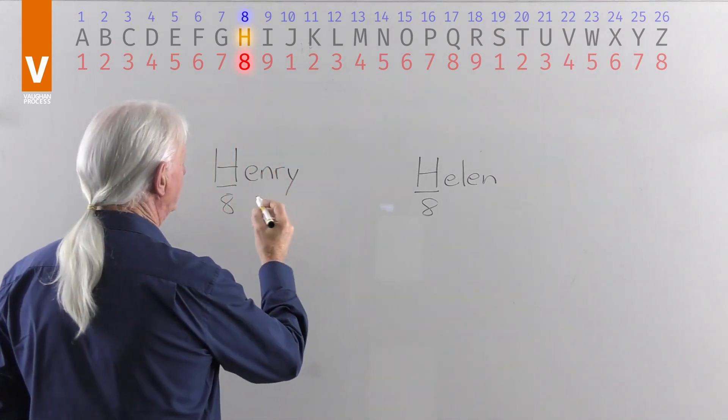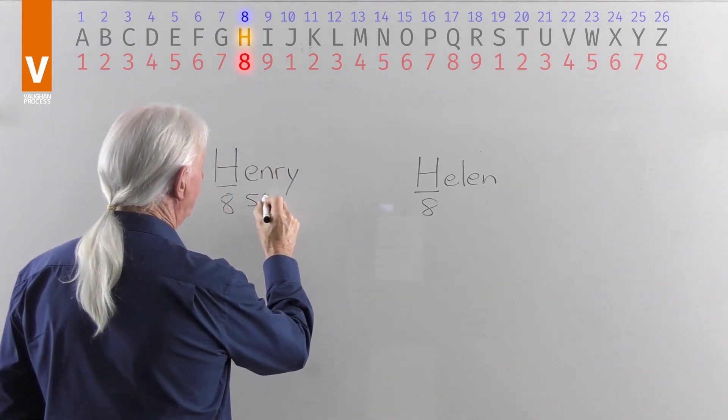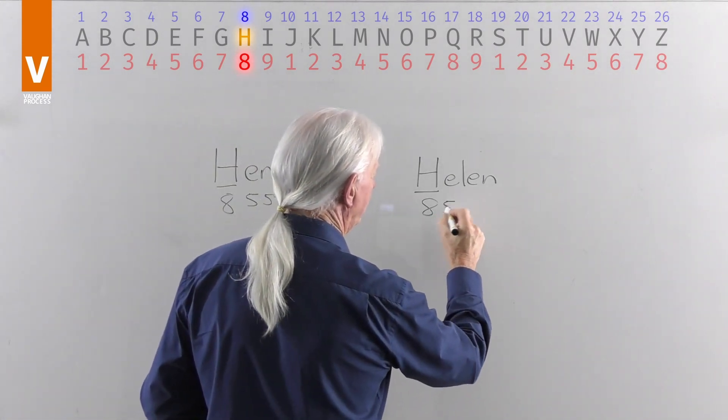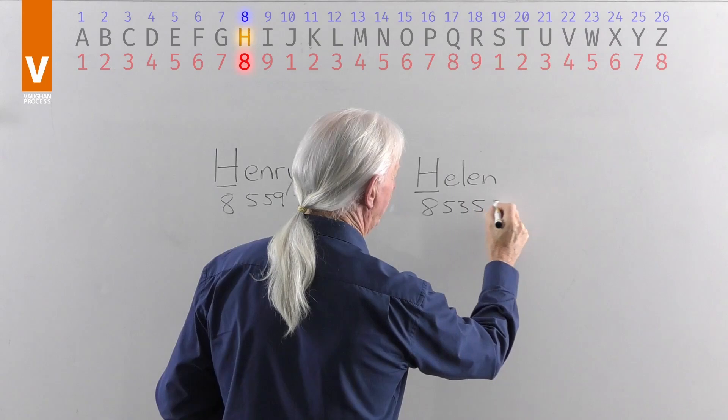So let's put the other numbers in under Henry: 5, 5, 9 and 7. 5, 3, 5 and 5.